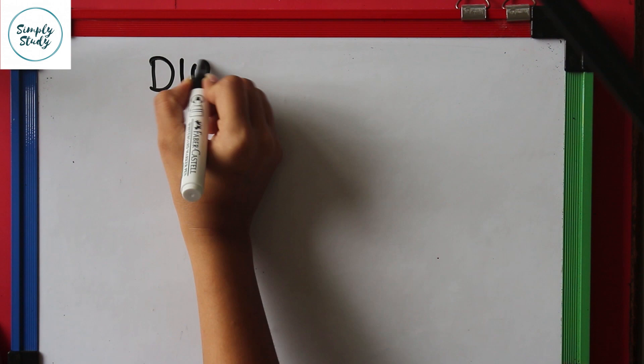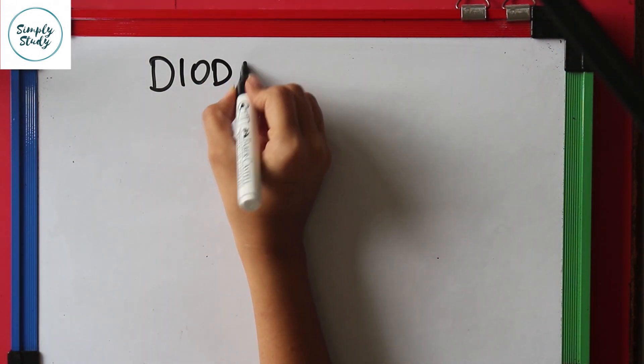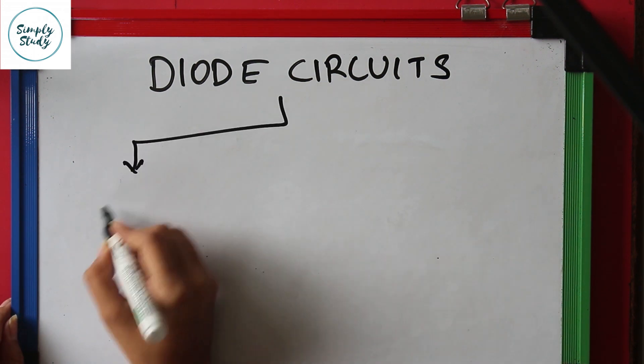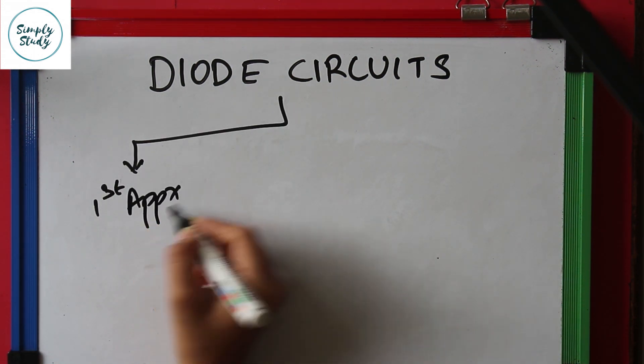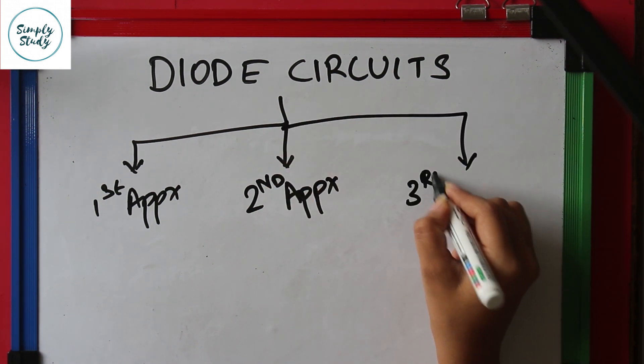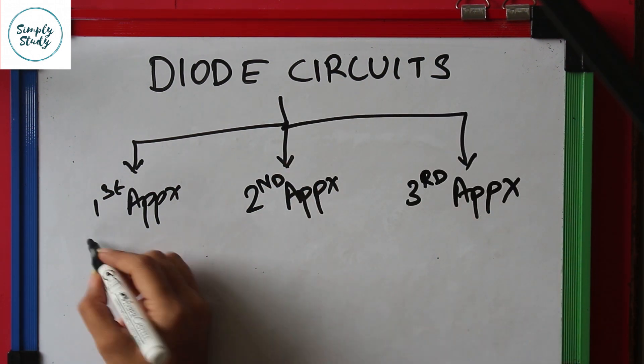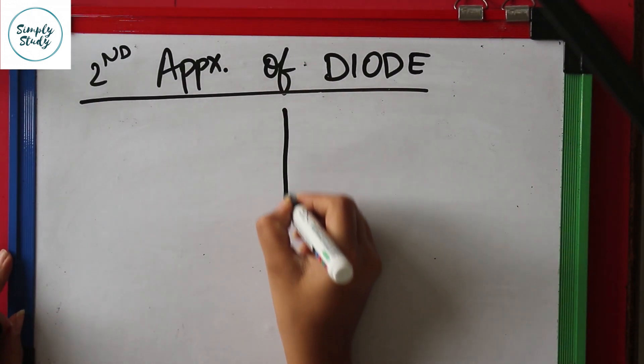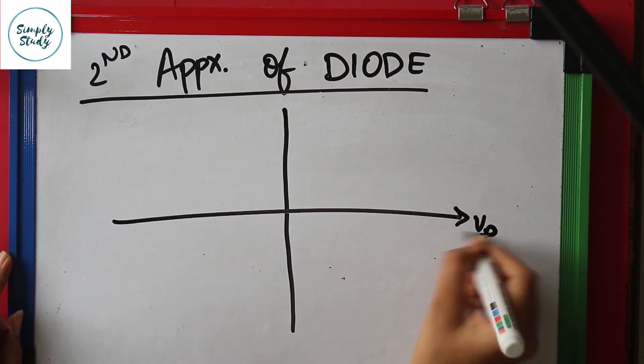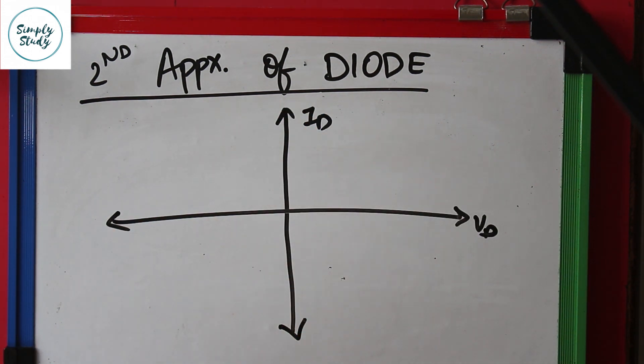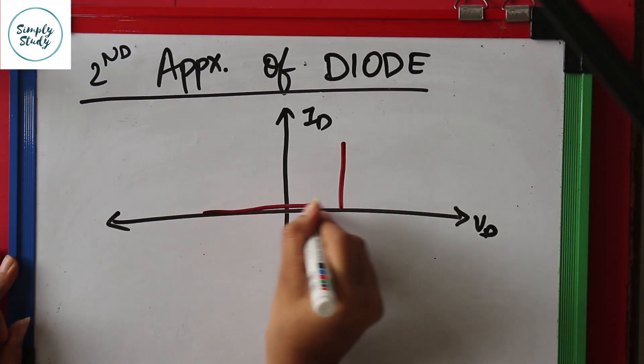Diode circuits can be solved using three approximations: first is the ideal diode approximation, second approximation, and third approximation. Why use the second approximation? Ideal approximation is used in troubleshooting situations. For more accurate values of load current and load voltage, we need to use the second approximation.